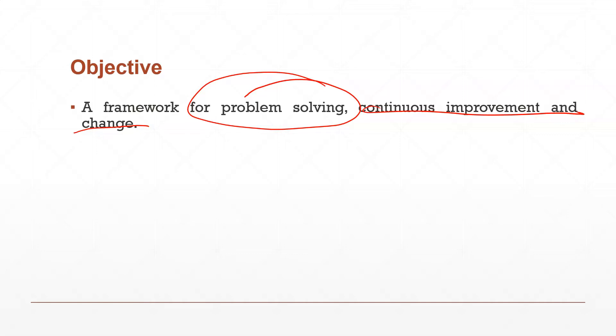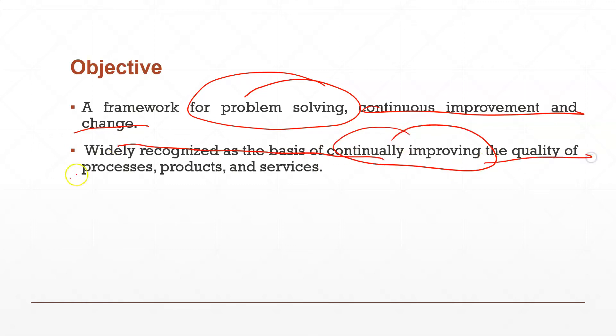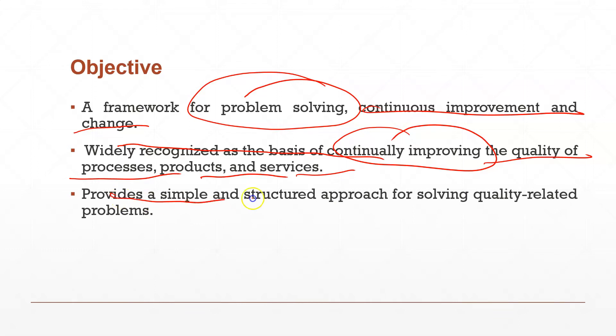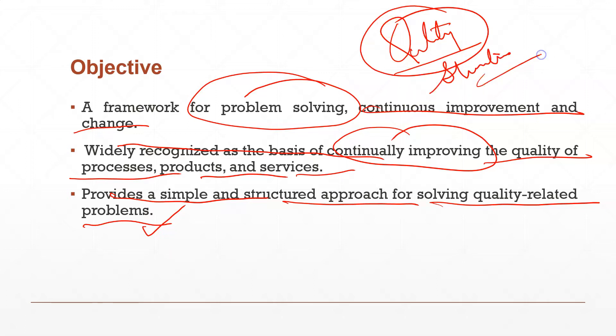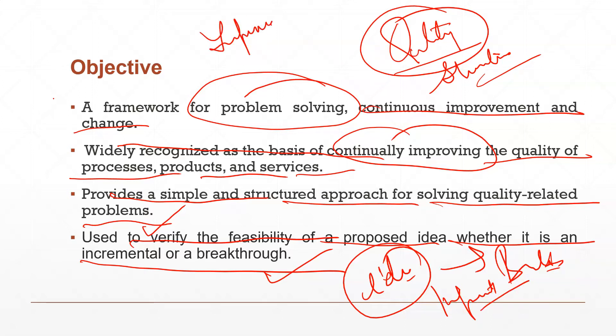If there is a change or improvement or a problem to solve, then you can use this cycle. It is widely recognized as the basis of continuously improving the quality of process, product and services. If any company wants to improve the process, product or services, then they can use this particular cycle. It provides a simple and structured approach for solving quality related problems. It is used to verify the feasibility of the proposal idea, whether it is incremental or breakthrough. We know that ideas are of two types: breakthrough ideas which nobody has done before, and improvement ideas.